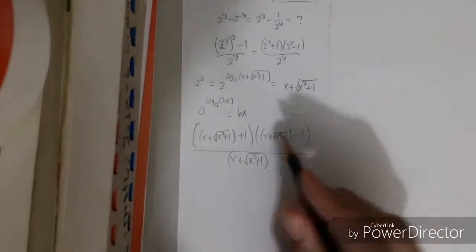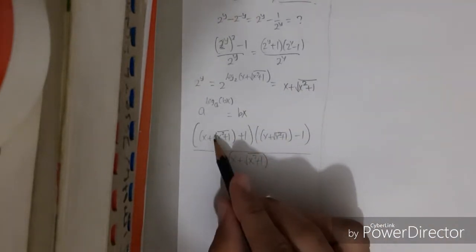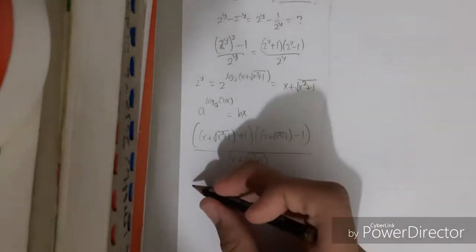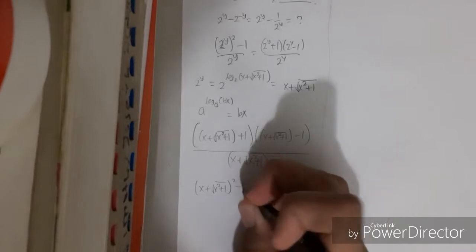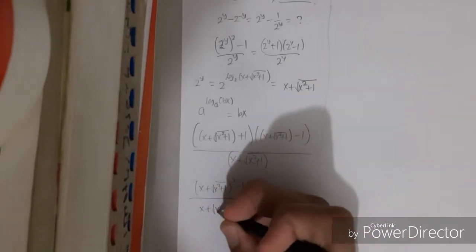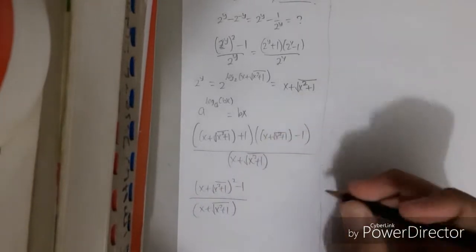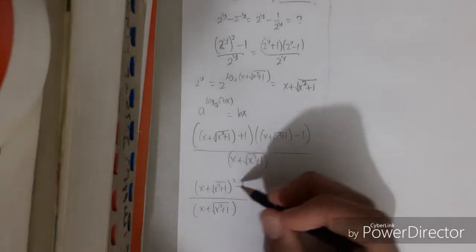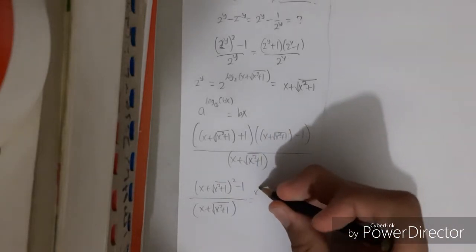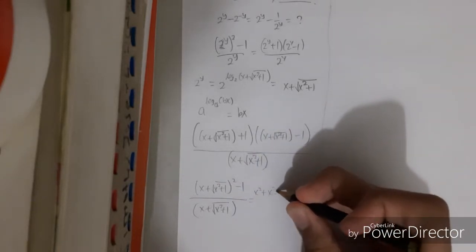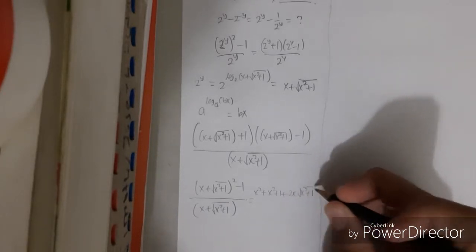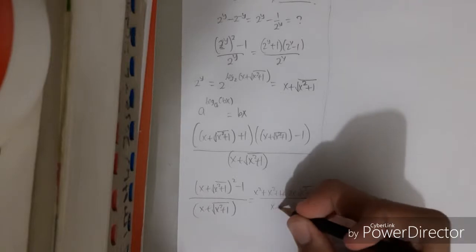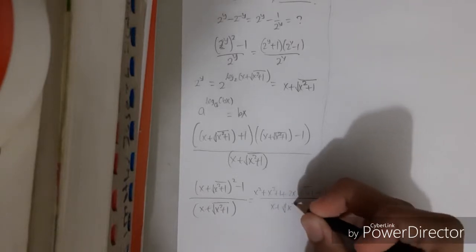Look, we have the brackets, and this is actually equal, so we can simplify that. We can calculate this: x squared plus x squared plus 1 plus 2x root of x squared plus 1 minus 1, all over x plus root of x squared plus 1.